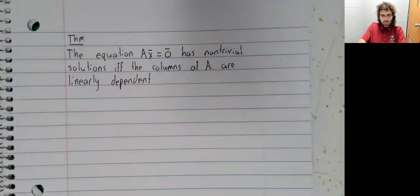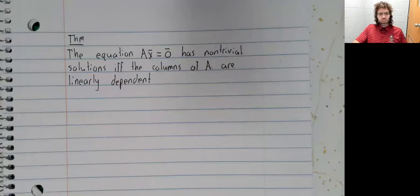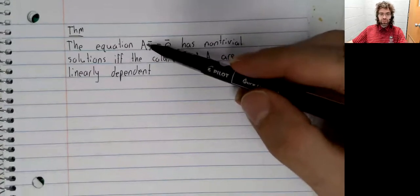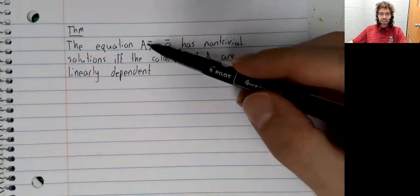I'll dive right in with a theorem. The equation Ax equals zero has non-trivial solutions if and only if the columns of A are linearly dependent. This theorem comes basically immediately from the definition of Ax.